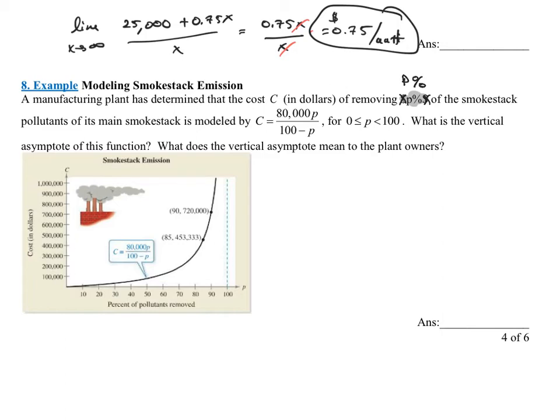Horizontal asymptotes, you'd be thinking top-heavy, bottom-heavy, balanced. But this is vertical asymptotes. Remember, vertical asymptotes factor and simplify, denominator equal to 0. Where is the function undefined? Vertical asymptotes undefined. Horizontal asymptotes, you're thinking top-heavy, bottom-heavy, balanced.